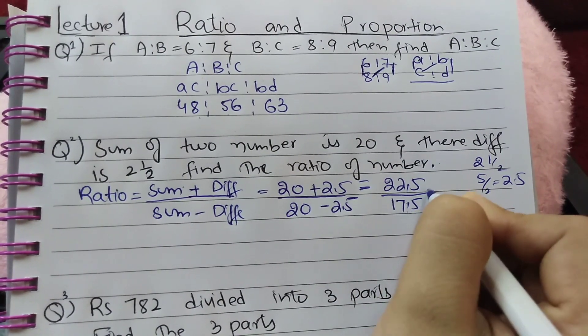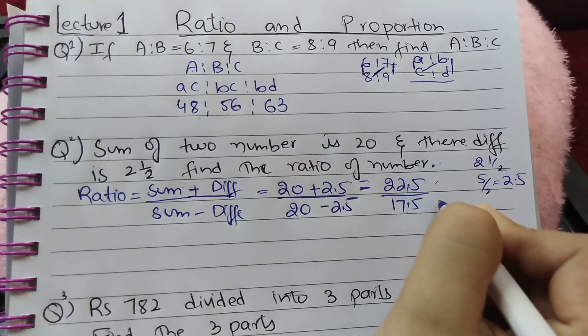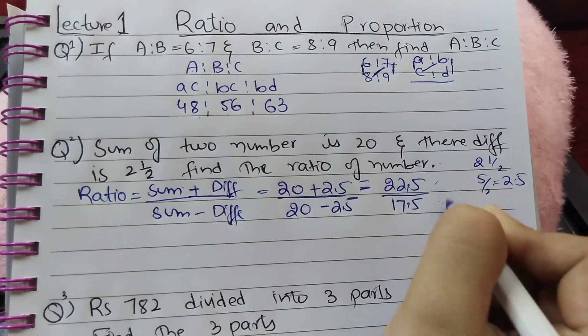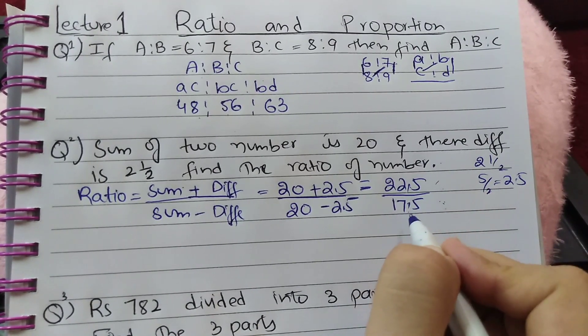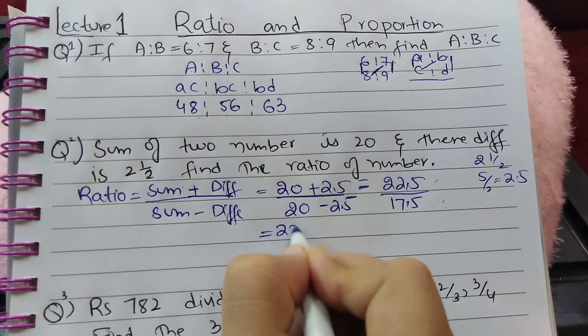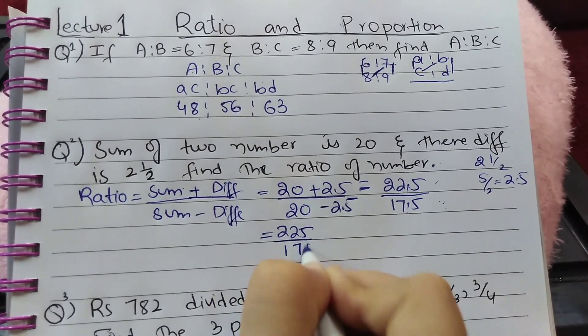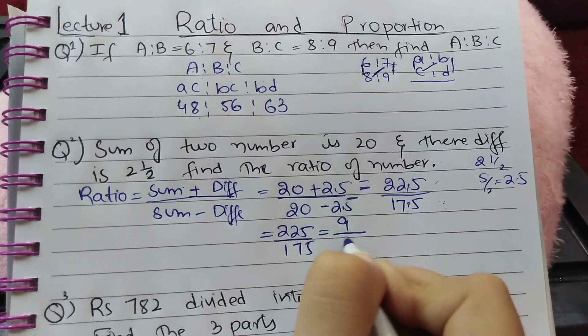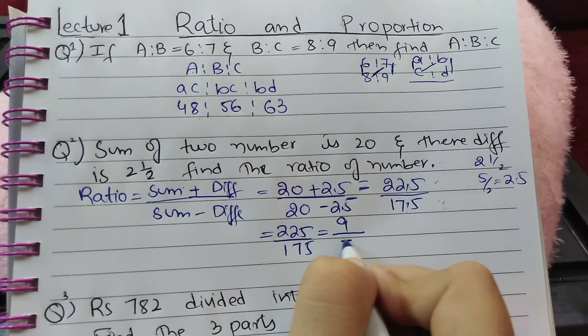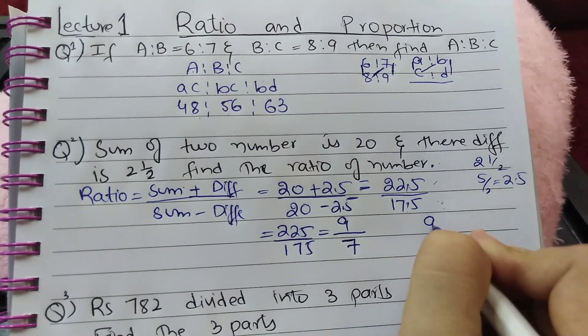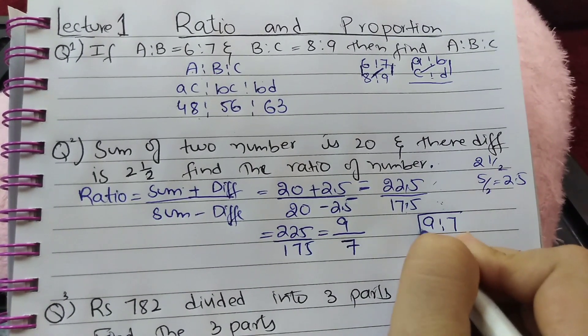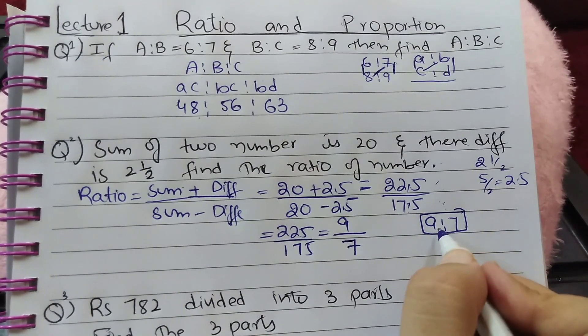We can cancel the decimal point as both have it in the same place. Multiply by 10 to remove decimals: 225:175. Dividing both by 25 gives 9:7. The ratio of the two numbers is 9:7.